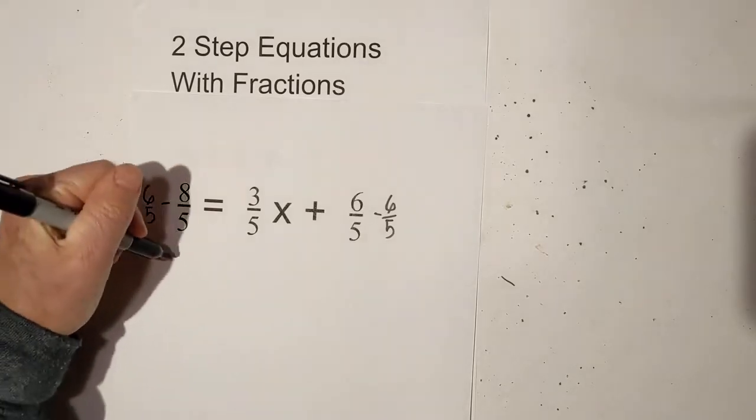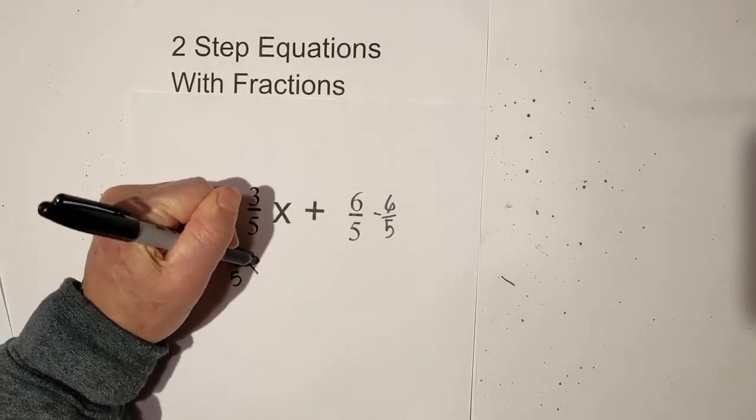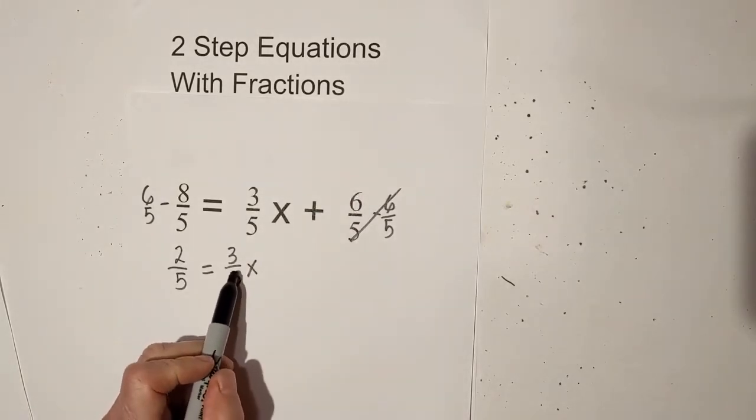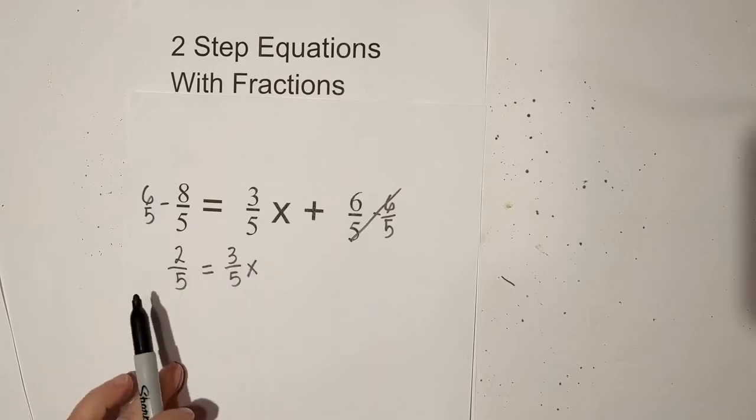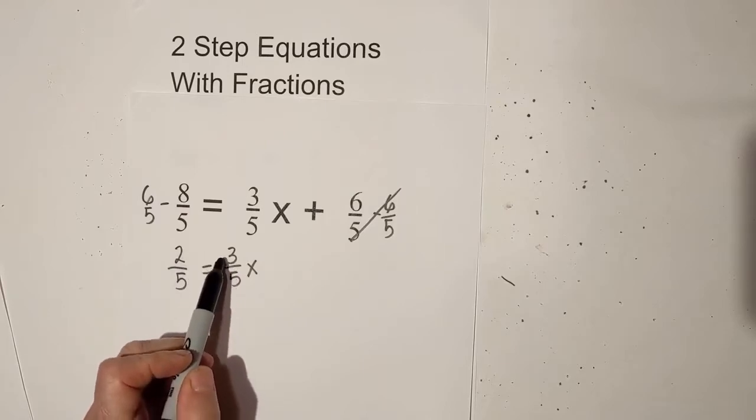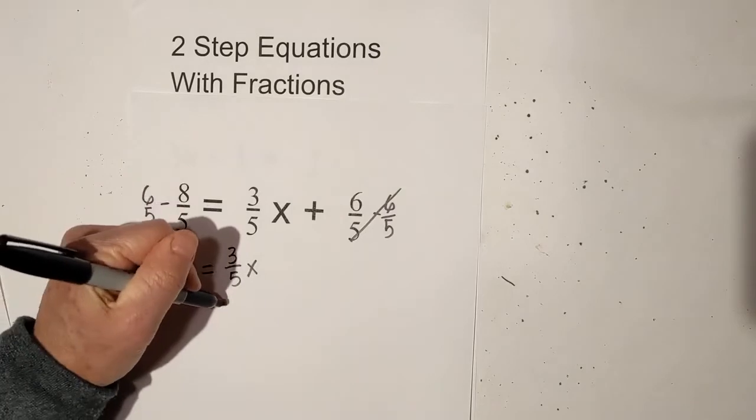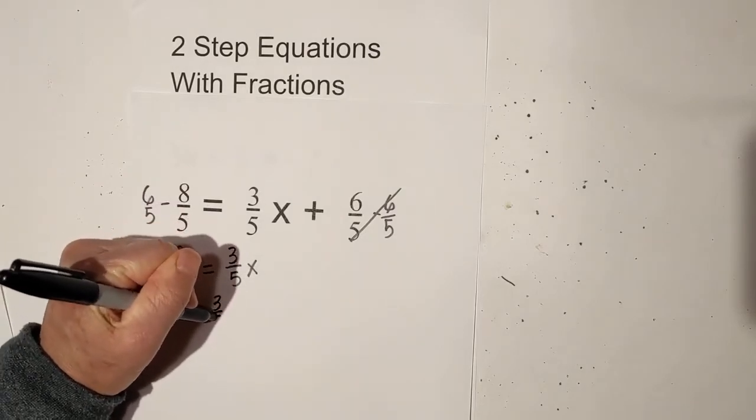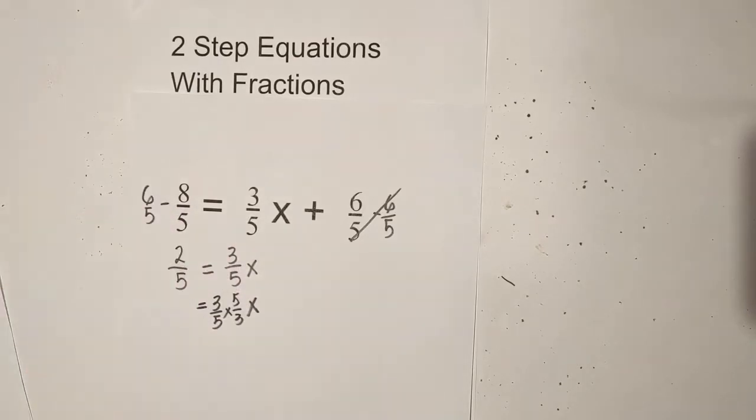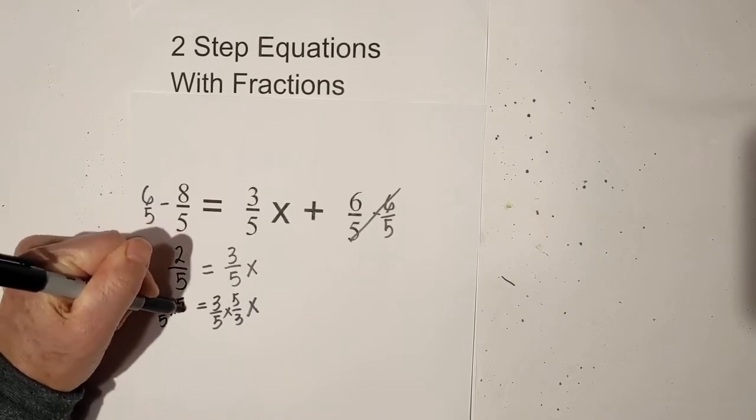And so eight minus six is two over five equals three-fifths x. Now these cancel out, so now what do we do? We need to get x by itself. So we have multiplication. In order to the opposite operation of multiplication is division, but with a fraction to get rid of the three-fifths, instead of dividing you can multiply it by its reciprocal, which will be - I'm going to rewrite this - it will be three-fifths times its reciprocal, which is five over three times x. So I need to do the same to this side. So we have two-fifths times the reciprocal five over three.